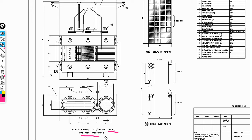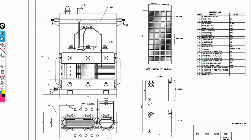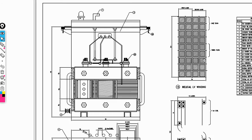This is the core-type transformer, and this is the assembly of the three-phase core-type transformer in AutoCAD. Now, here, several parameters are needed.